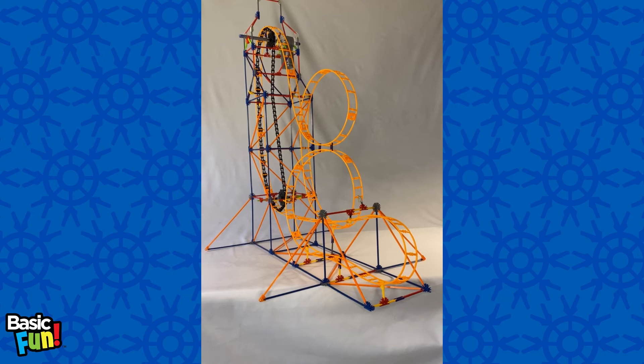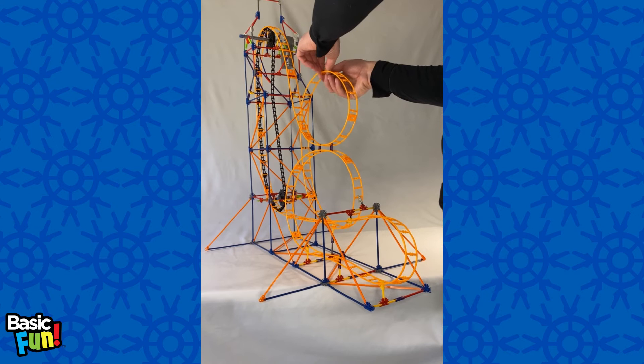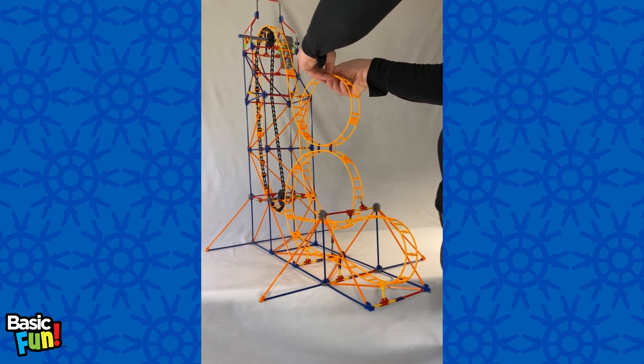Alright, now we're on our final step. We're just going to add the car onto the track. To do this, all you're going to do is disconnect two pieces of track that are easily accessible. I'm going to take these two here, disconnect them,